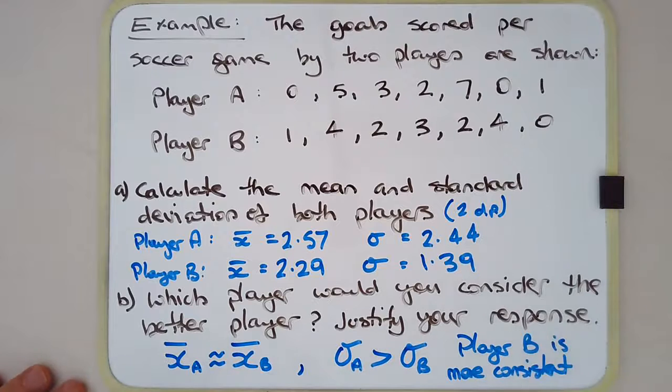I've run out of space here and I would have actually written a statement for you to see how I would write it. I would say Player B would be considered the better player because the averages or the means of both players are fairly close—I've just written that using maths here.